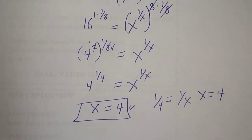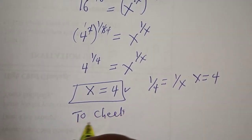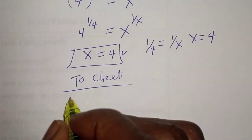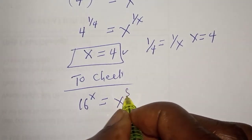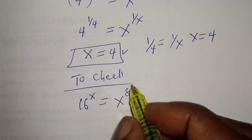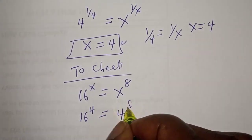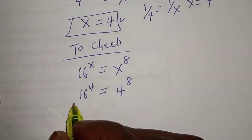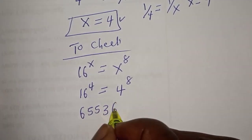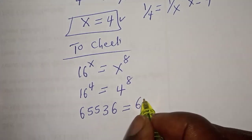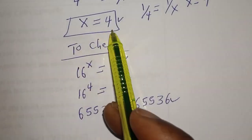We can check to confirm if our answer is right or wrong. To check, we have the given equation: 16 raised to power s is equal to s raised to power 8. Now, when s is equal to 4, we have 16 raised to power 4 is equal to 4 raised to power 8. And 16 raised to power 4 is 65,536, which is equal to 4 raised to power 8, which is also 65,536. This satisfies the given equation at s is equal to 4.